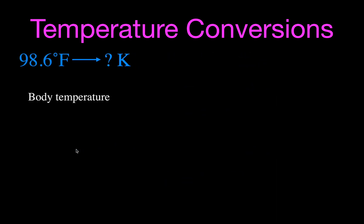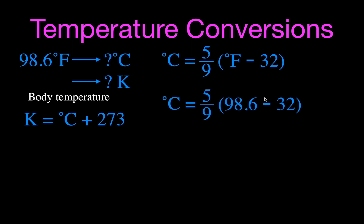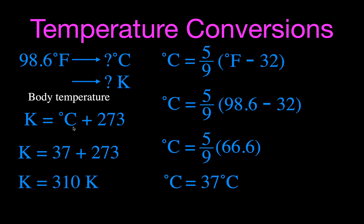Now, body temperature: if it's 98.6°F, what is that in Kelvin? There's no direct equation relating Kelvin and Fahrenheit, so we do it in two steps. First, convert to Celsius: 98.6 minus 32 is 66.6, times 5 divided by 9, gives 37°C. Then convert to Kelvin: 37 plus 273 equals 310 Kelvin. So body temperature is 98.6°F, 37°C, and 310 K.